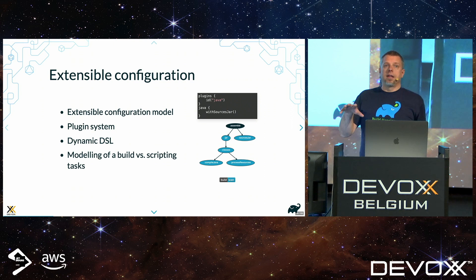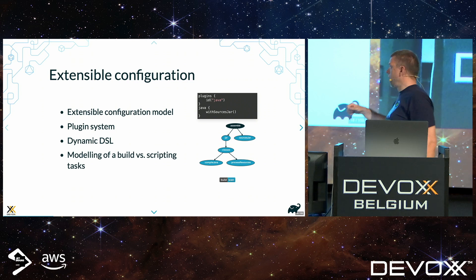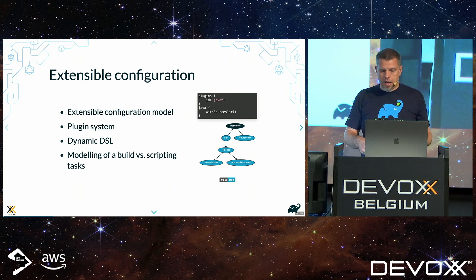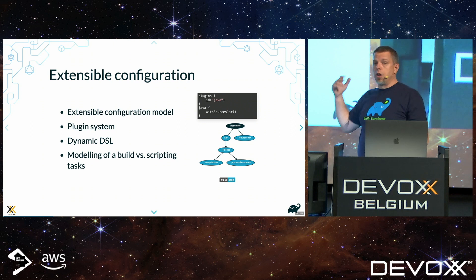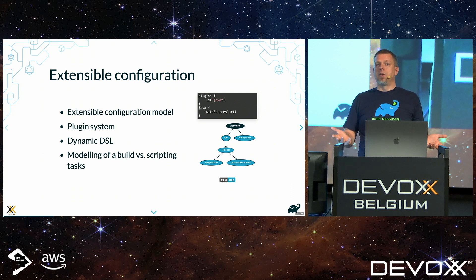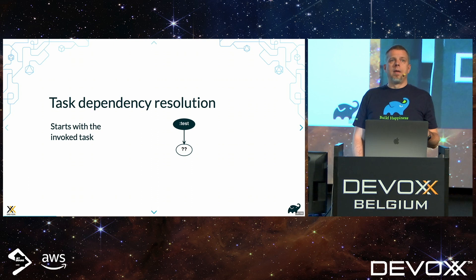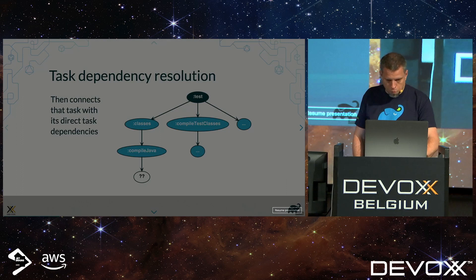The other thing that a set of plugins does is model the different actions of your project. That's the graph you see — we have this concept of an assemble task. What is assemble? It just makes sure all the binaries of your project are constructed. In order to do that it may need to run the jar task, it may need to run some source jar, and in order to do the jar task, we better compile the code. When you invoke a Gradle command, you start with an entry point — I want to run my tests — and Gradle resolves the full dependency graph of tasks required.